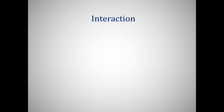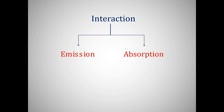Those interactions can be: first, where the light is emitted from the matter; the other type of interaction can be absorption. Depending upon that we have two instruments: FES which is flame emission spectroscopy, and AAS which is atomic absorption spectroscopy. In the emission case, we have the example of flame emission spectroscopy — the flame word should be noted, as the light is emitted by the matter itself in the presence of the flame, therefore it is called flame emission spectroscopy.